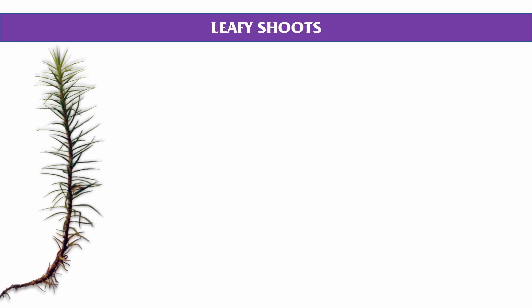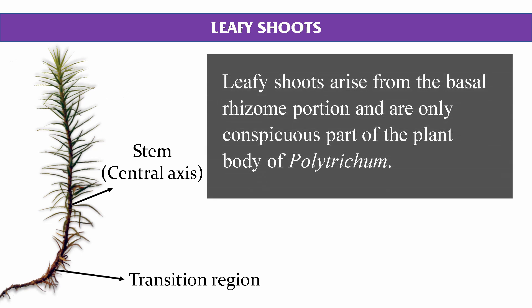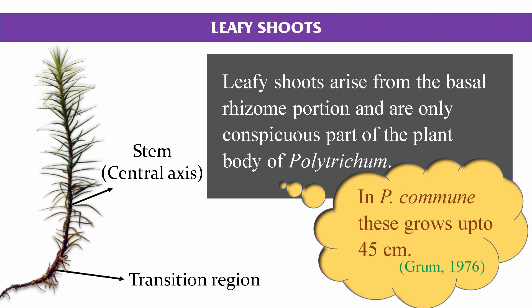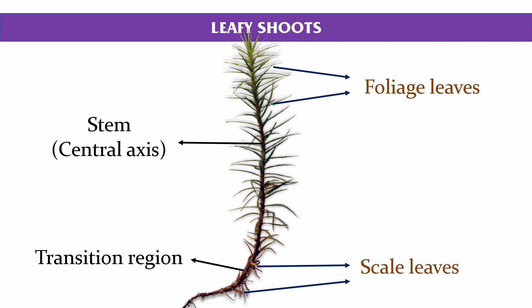Leafy shoots arise from the basal rhizome portion and are the only conspicuous, that is the only visible, part of the plant body. The leafy shoots are rarely branched and they can reach up to 45 cm, as in the case of Polytrichum commune. Externally, leafy shoots can be differentiated into stem or central axis and leaves, which are of two types: foliage leaves and scale leaves.